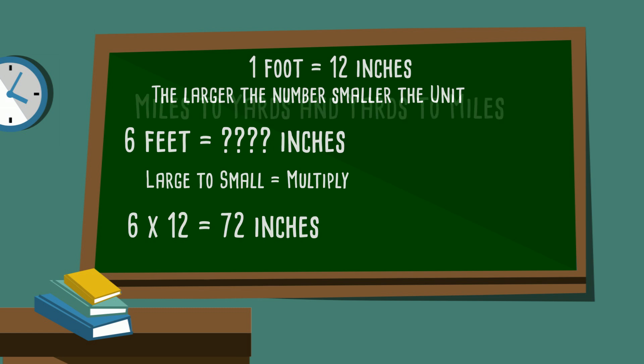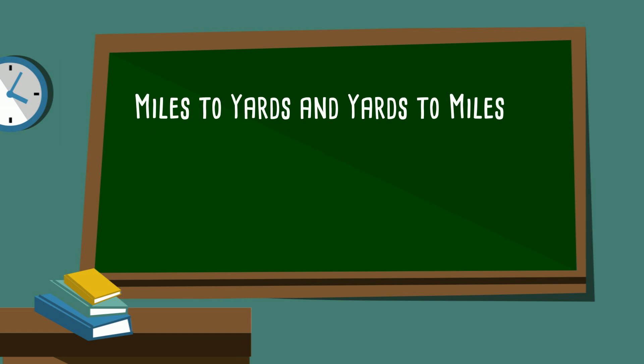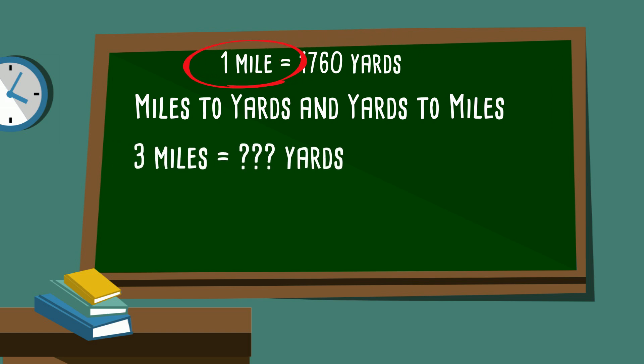Now let's apply this same concept with converting from miles to yards. Your hint is 1 mile equals 1,760 yards. Let's first determine which is larger, mile or yards. Remember, the larger number is smallest, so yards is smaller than mile. We're going from miles to yards, which is smaller, so we're going to multiply — large to small, you multiply.